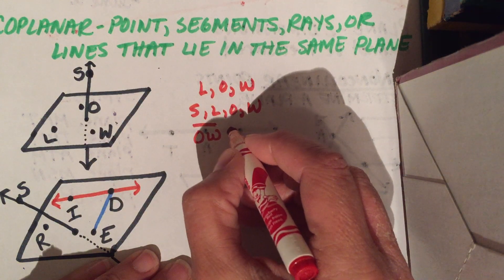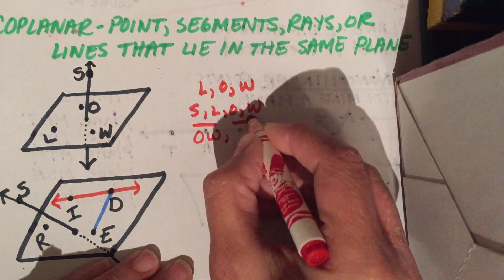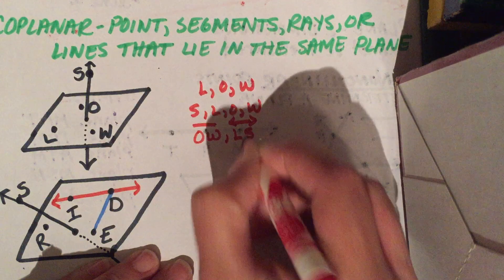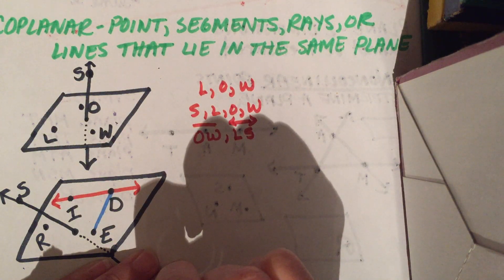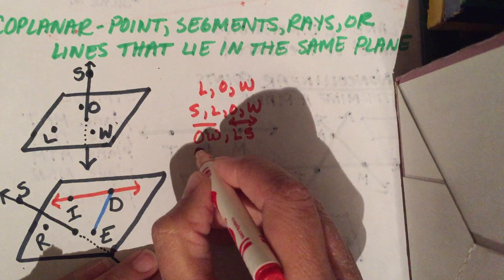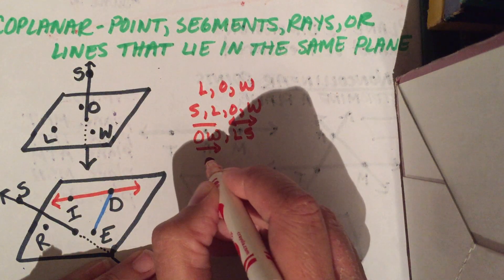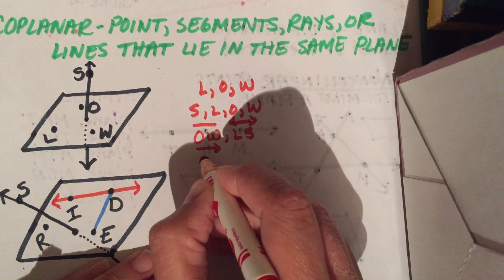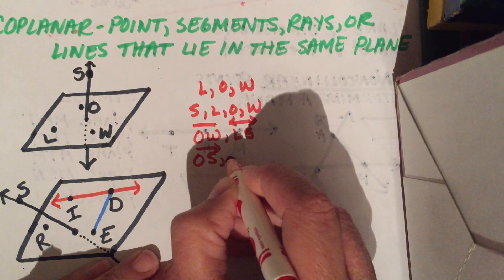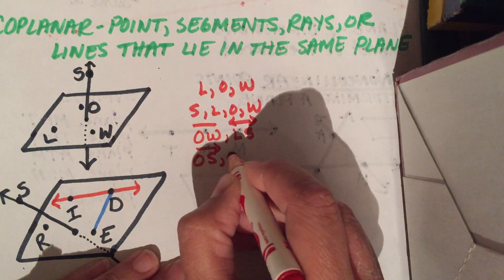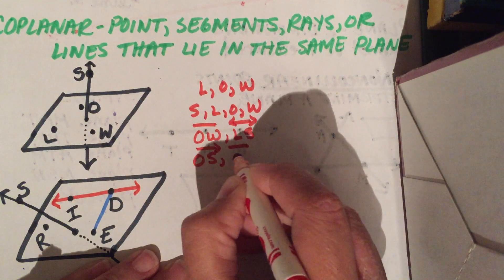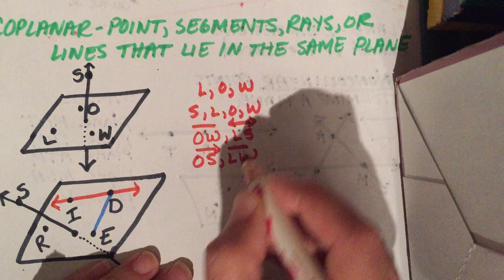Ray OS and segment LW. We'll do that. Now, even though I've written these out and they're not connected, you can assume that those points are there.